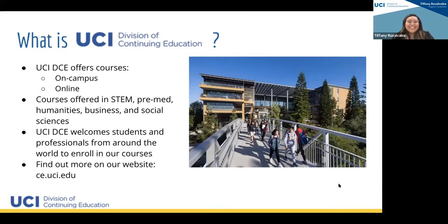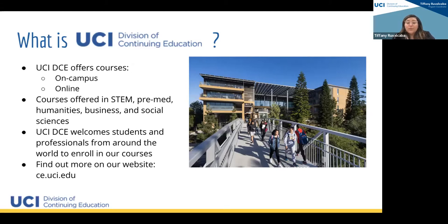So what is UCI Division of Continuing Education? We offer courses both on campus and online. The data analytics certificate program is completely online, though there are some live Zoom sessions hosted by instructors — you'll learn about those timings once you enroll. We offer courses in different categories including STEM, pre-med, humanities, business, and the social sciences, and we welcome both students and professionals from around the world. You can find more information at ce.uci.edu.